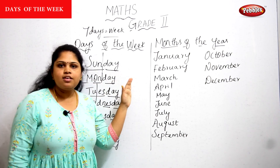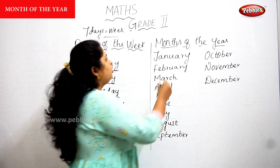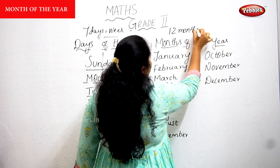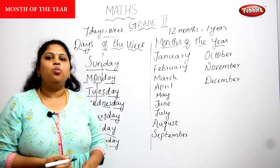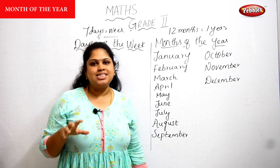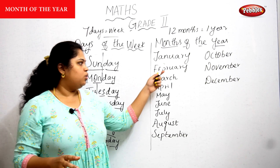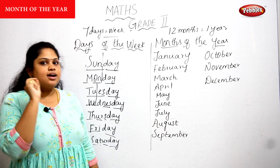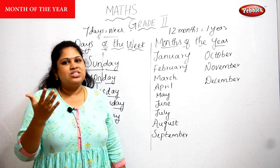When days move, the months come. How many months in a year? There are 12 months equal to one year. One year is equal to 12 months. What are the 12 months? January, February...